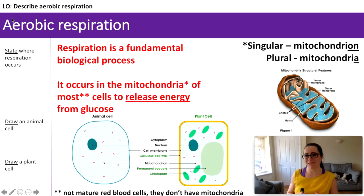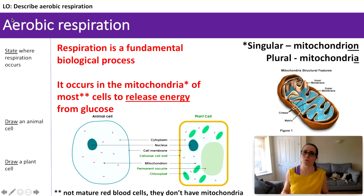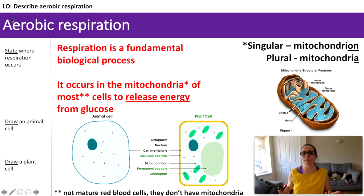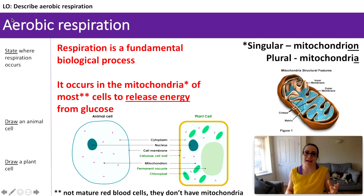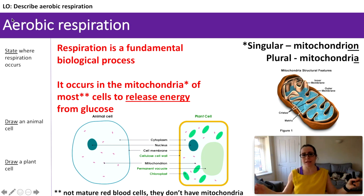Hopefully your diagrams look something like this. You've got the cytoplasm in both — this is where most chemical reactions occur in the cell. We've got the nucleus, where DNA is stored and which controls the activities of the cell. The cell membrane controls what substances pass in and out of the cell — it controls what enters and what exits.